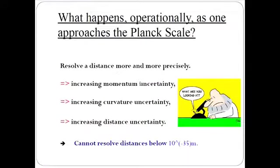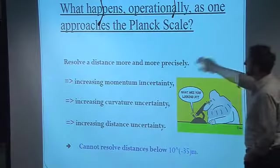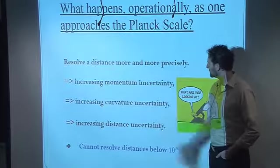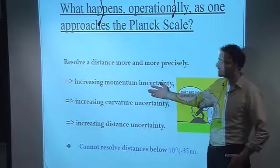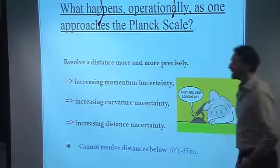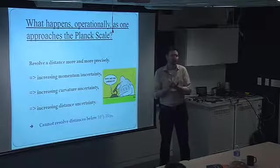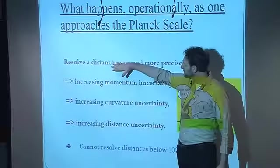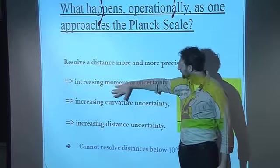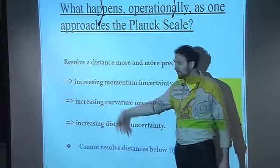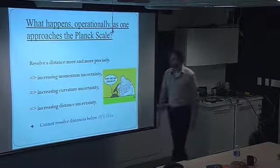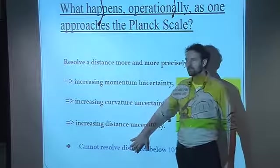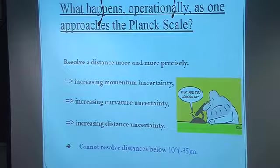So what happens operationally as one approaches the Planck scale? Let's just review a very basic argument. If you want to resolve a distance more and more precisely, then a smaller position uncertainty will trigger a larger momentum uncertainty. And eventually, as the momentum uncertainty becomes very large, since momentum curves space just like energy does, we expect a curvature uncertainty. And eventually, if we don't know exactly what the curvature is between two points, how can we know what their distance is either? So we start with trying to resolve distances very accurately. We end up increasing momentum uncertainty, increasing the curvature uncertainty, and that eventually leads to an uncertainty in distances again. So a back-of-the-envelope calculation shows that there ought to be a limit to how far the notion of distance makes sense, probably down to about 10 to the minus 35 meters.